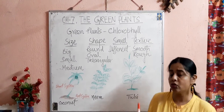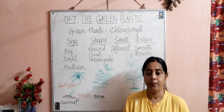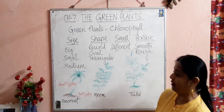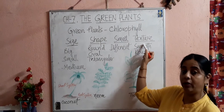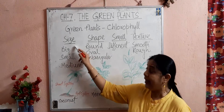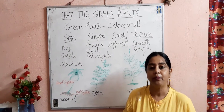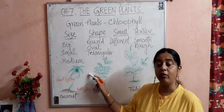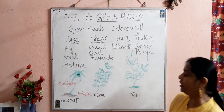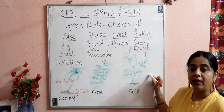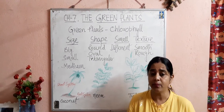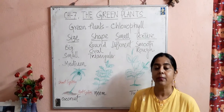Now students, the second thing is the types of leaves. Children, different plants have different leaves. Leaves have four characteristics: size, shape, smell, and texture. The leaves of different plants are different in size. If you see the leaves of a coconut plant or a papaya plant, you will find that their leaves are very big in size. But if you see the leaves of a neem tree, a tulsi plant, or mint, you will see that the leaves are small in size. There are also some leaves which are medium in size. So the size of leaves of different plants varies.